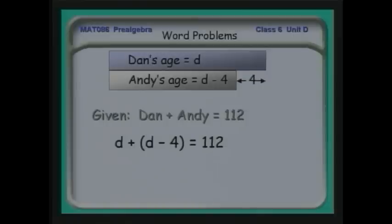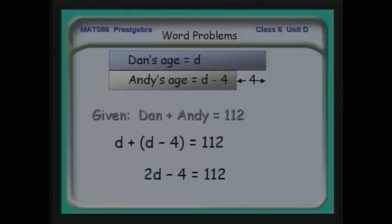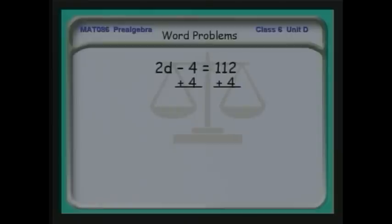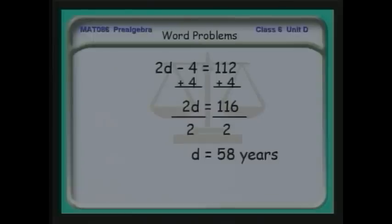Since there's nothing multiplying the parentheses, I can simplify: D plus D minus four becomes 2D minus four equals 112. Adding four to both sides gives 2D equals 116. Dividing both sides by 2, I solve for Dan's age: D equals 58 years. Notice that when I finish solving, I put the units in — we were talking about years, so I report the answer in years.